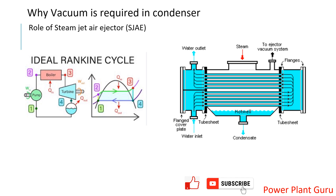Let us understand why vacuum is required in the condenser and how it is created or maintained. What we see here is an ideal Rankine cycle — in an actual plant there is no ideal cycle. From point 1 to 2 is the boiler feed pump (BFP), which increases pressure. After BFP, water flows through the economizer, drum, and superheater, so there is always a pressure drop along that path.